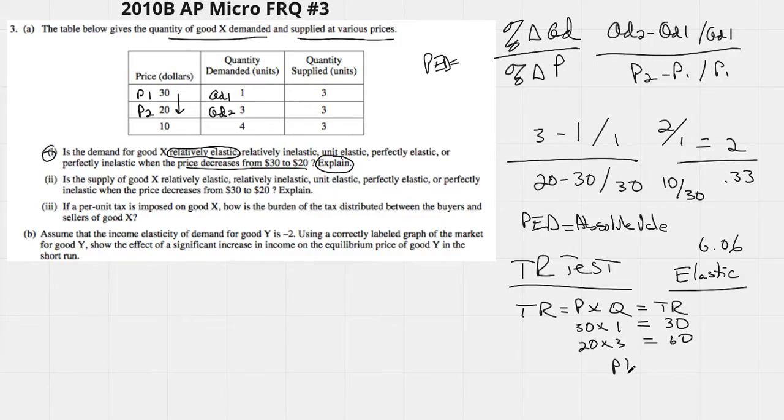So 20 times 3 is obviously 60. It looks like when my price went down, my total revenue went up. Now there's a very easy way, sort of a graph to use to make sure that you're recognizing this the same way as you should.